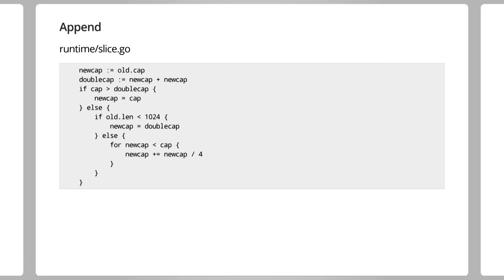We can see here — this code is from the slice.go file in the runtime package. If there's less than 1024 elements, then it's actually doubled; otherwise, the growth factor is 1.25. It's actually pretty cool. You should benchmark this when you get home and show that it actually does work, because it's kind of neat the way that theory and practice actually match up here.